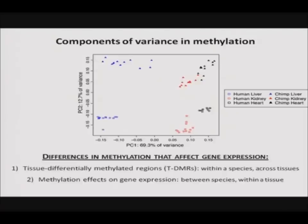Now that the data reveal expected patterns, I'd like to focus on two evolutionarily relevant questions. First, to identify tissue-differentially methylated regions in both humans and chimpanzees and ask about the extent to which these regions are conserved between species. And second, to focus on methylation differences between the species and ask about the extent to which methylation might regulate differential gene expression.